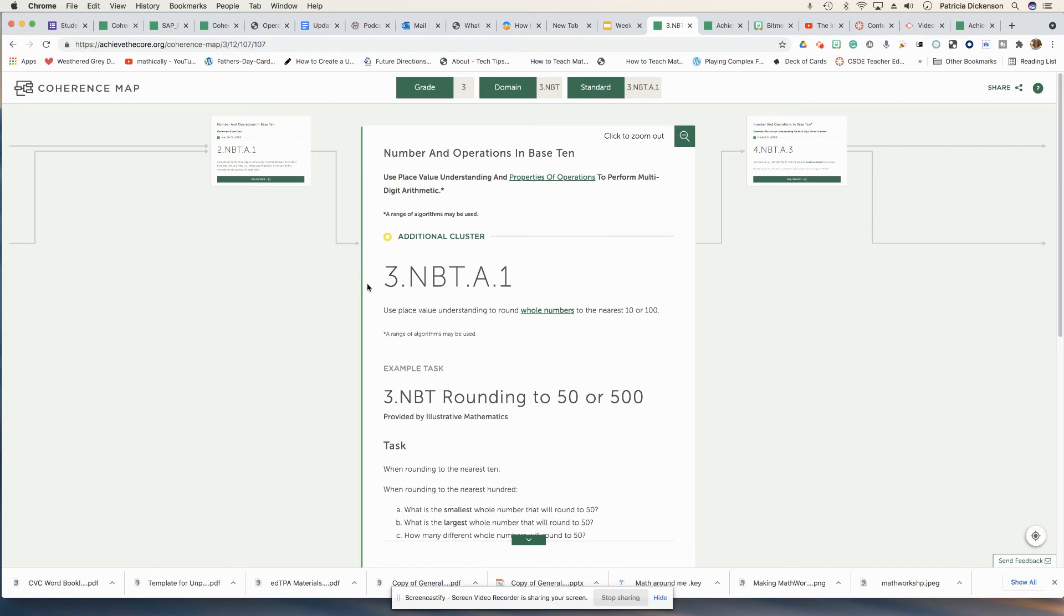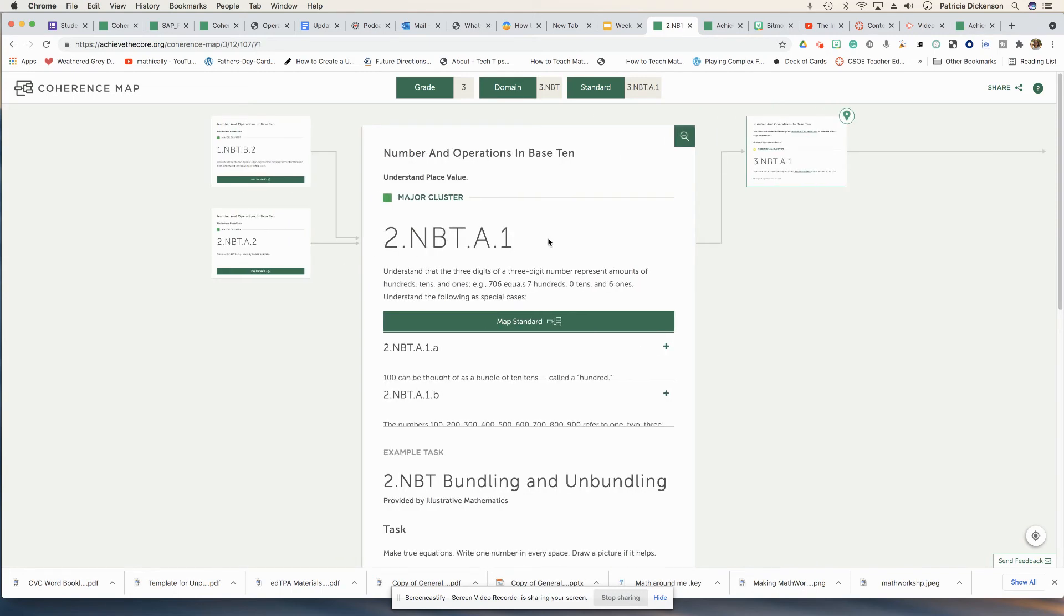Notice that it's three, which is the grade level, NBT numbers and base 10, and then cluster A standard one. Well, I can backwards map. It's going to do that for me here on this coherence map, and it will show me those previous skills that students should have learned in second grade. So now I can see what do I need to do to help support them?